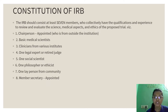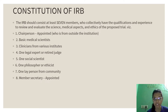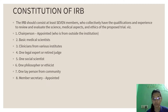Talking about the constitution of IRB: IRB consists of at least seven members whose collective qualifications and experience are sufficient to review and evaluate the science, medical aspects, and ethics of the proposed trial. These include: the chairperson appointed from outside the institution, a basic medical scientist, a clinician from various institutes, one legal expert or retired judge, one social scientist, one philosopher or ethicist, one layperson from the community, and the member secretary who is appointed.